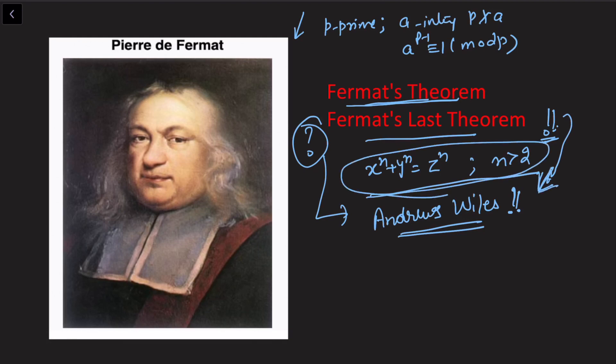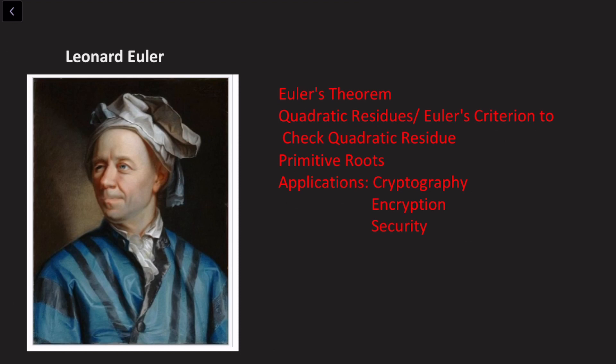We're also going to explore some of the contributions of Euler. Euler contributed a lot to mathematics and to number theory. We are also going to look at Euler's Theorem in number theory, which just extended Fermat's Theorem. It's not only a raised to p congruent to 1 modulo p, but in fact we can have a raised to phi n congruent to 1 modulo n, where phi n is all those numbers which are relatively prime with n.